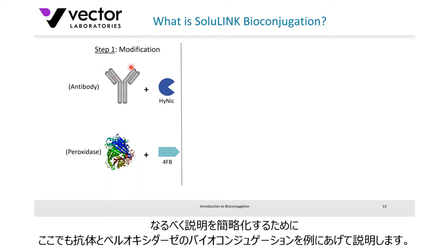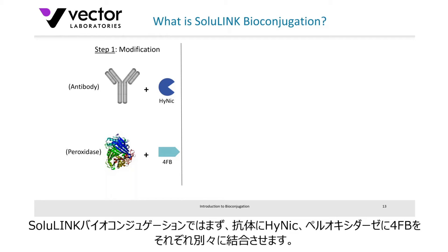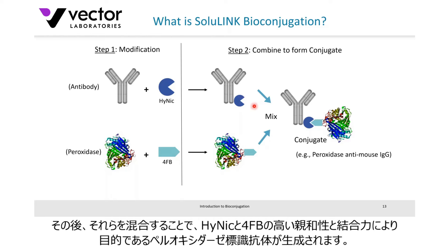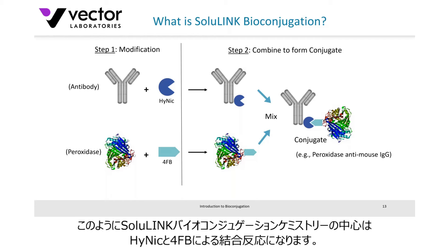Here's our antibody, and we need to conjugate it to the enzyme horseradish peroxidase. For SoluLINK conjugation, first you attach HyNic to the antibody, and in a separate step you attach 4FB to the enzyme. Once both steps are performed, you mix them together. Given the high affinity of HyNic for 4FB, you essentially get a bioconjugate — a peroxidase-conjugated antibody. The heart of SoluLINK bioconjugation chemistry is the use of these HyNic and 4FB molecules to link together and form bioconjugates.